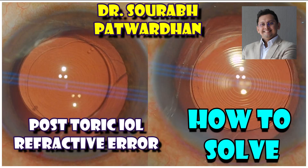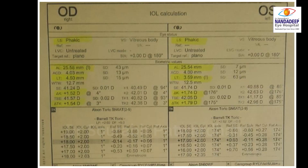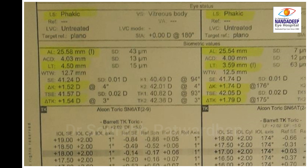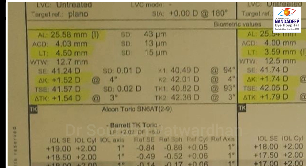This was the case — the IOL power measurement done before the surgery. In hindsight, I noted that this patient had very high anterior chamber depth; you can see it's almost 4 mm in both eyes. The power was calculated using the Barrett TK toric calculator, which gave 1 degree as the IOL axis for implantation.